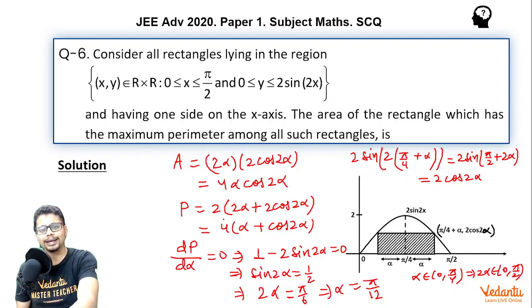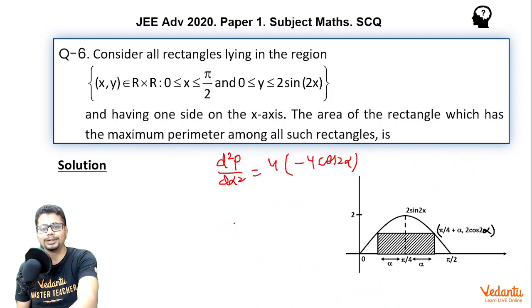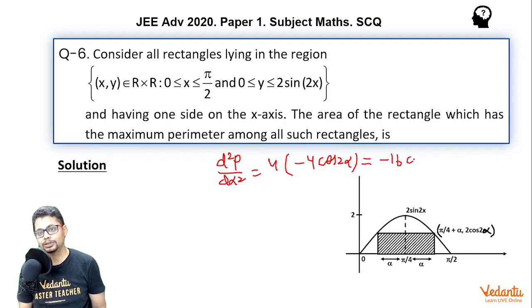Of course we have neglected this 4 which doesn't affect the sign. So when α is π/12 this expression d²P/dα² would become minus 16 times cos(π/6) which is clearly negative. So that means indeed at α equal to π/12 we are getting maximum.